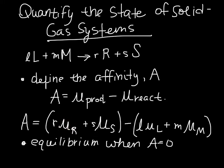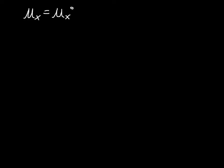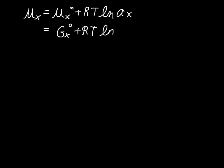What we can get at is the activity. So we want to rewrite this equation using the activities, keeping in mind that the chemical potential of X is equal to the chemical potential of pure X, plus RT·ln times the activity of X — or equivalently, G naught of X plus RT·ln of A of X.